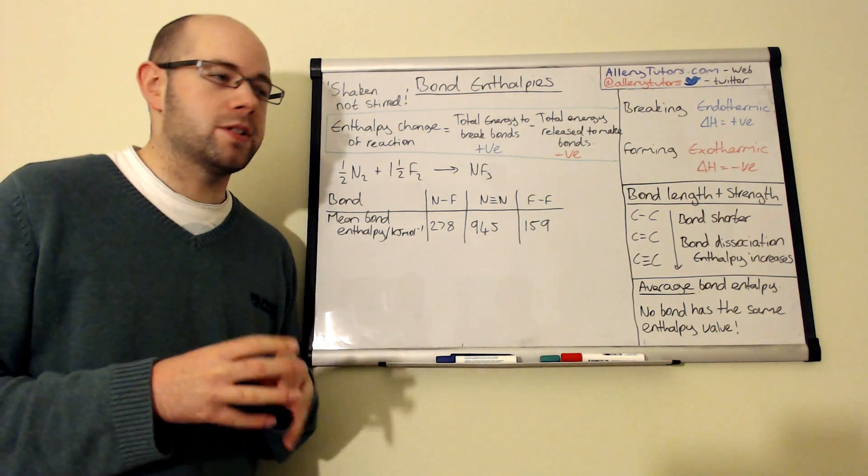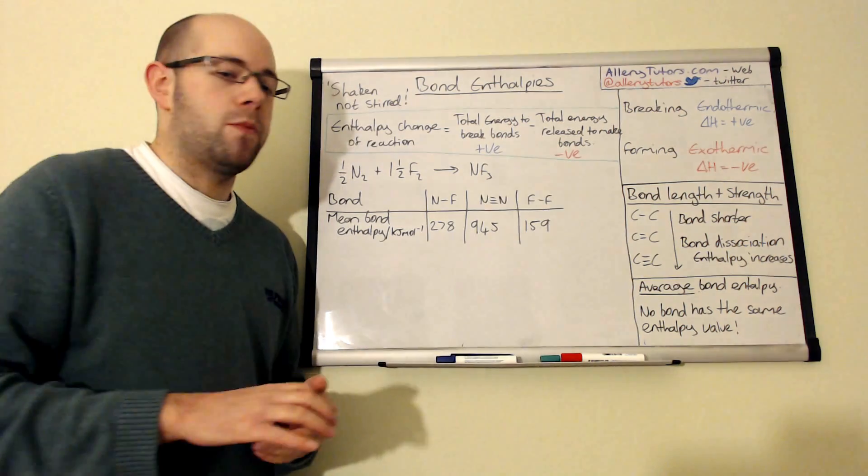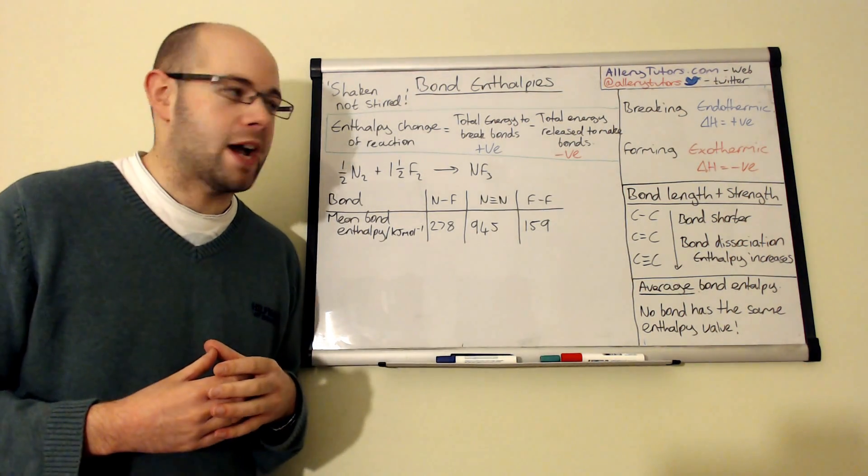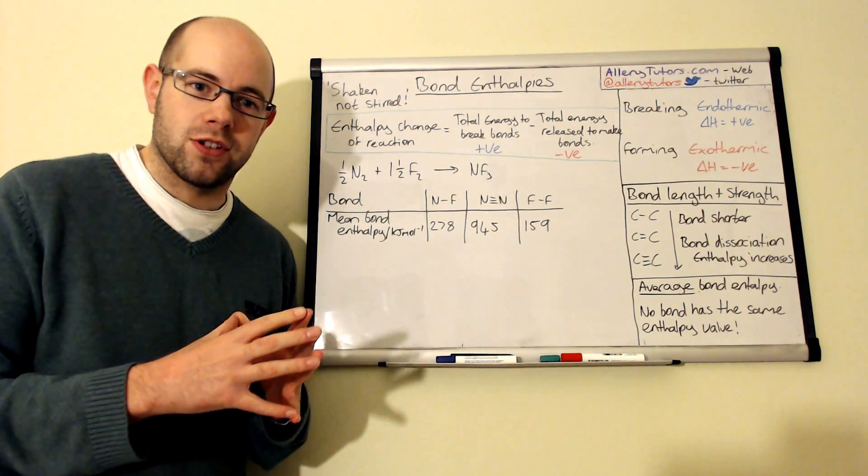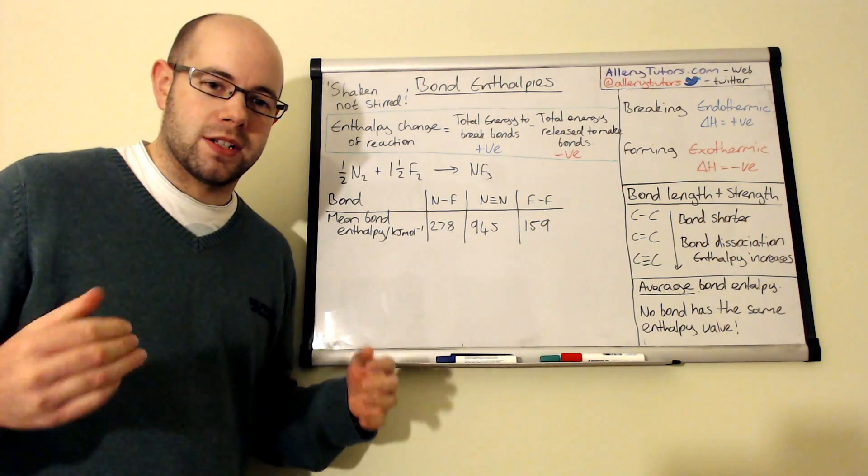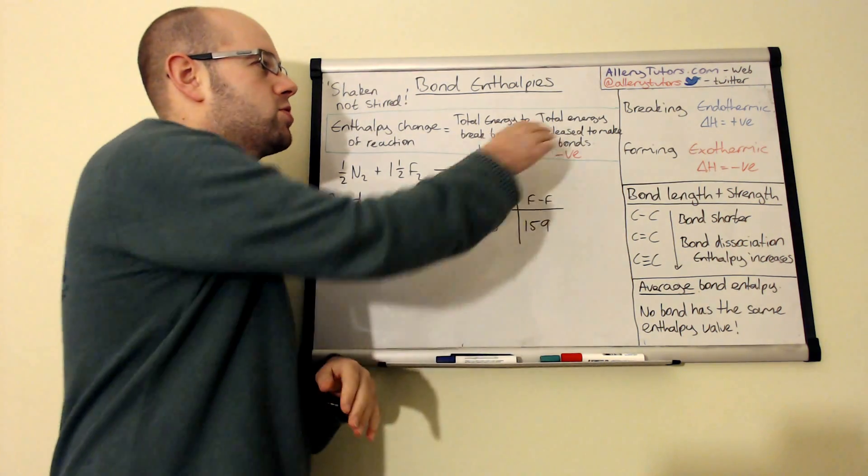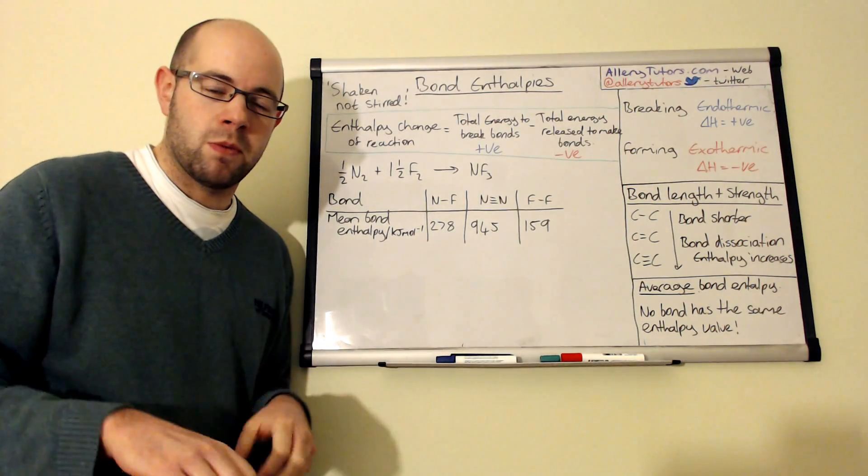So when we want to break a bond, as you can see up here, we describe that as an endothermic reaction. That means that we need energy. Energy is taken into the reaction to break them bonds and it's taken in from the surroundings. So we describe that as an endothermic process when we need to break bonds.